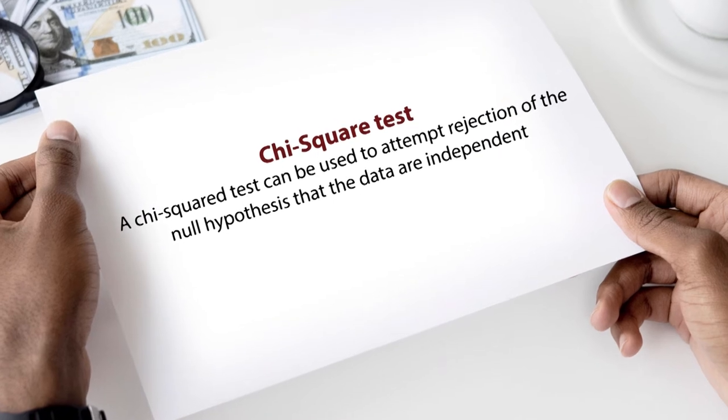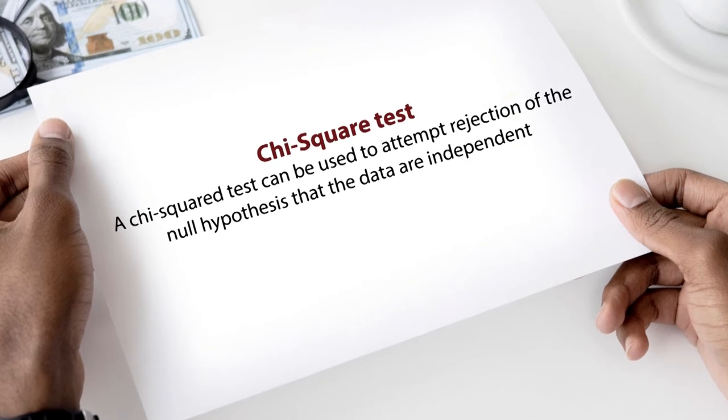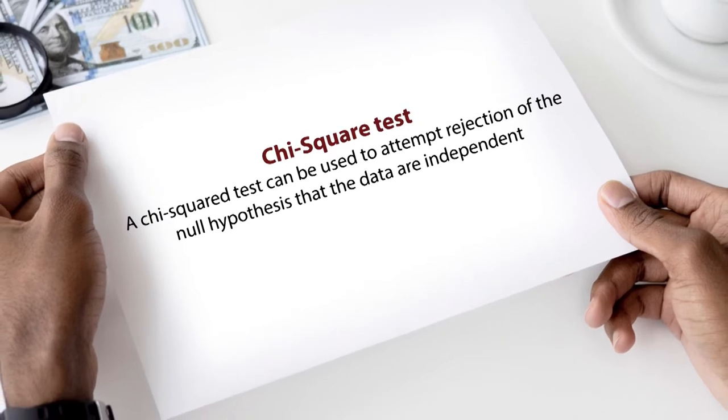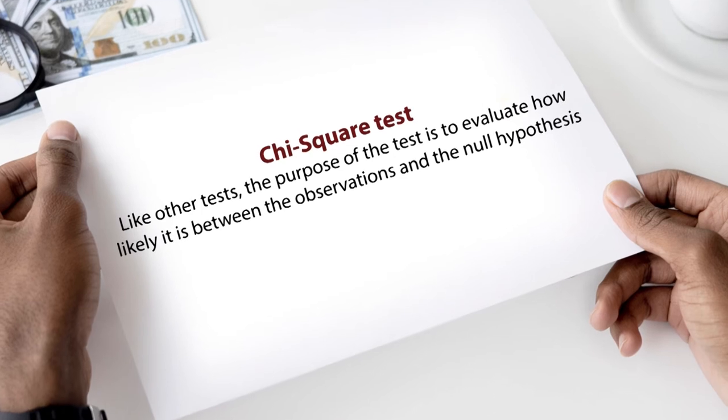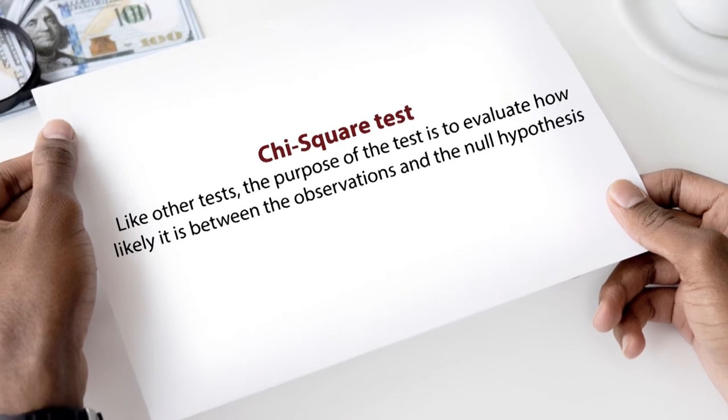A Chi-square test can be used to attempt rejection of the null hypothesis that the data are independent. Like other tests, the purpose is to evaluate how likely the observations are under the null hypothesis. It is a statistical method used to determine the goodness of fit. Goodness of fit refers to how close the observed data are to those predicted from a hypothesis; the Chi-square test does not prove a hypothesis is correct, it evaluates to what extent the data and hypothesis have a good fit.